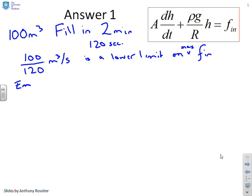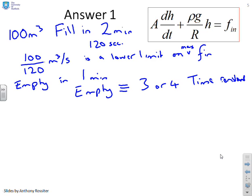Now what was the next thing? We wanted it to empty in one minute. Now, given that this is a first order system, then what you can do is you can say empty is equivalent to 3 or 4 time constants. I'm not going to be too pedantic at this point, because that's a decision for you to take. So what I'll do is I'll use 3 time constants, but if you use 4 it doesn't really matter. So what we've got is t is going to be approximately 20 seconds. That's the sort of time constant we need from this system.